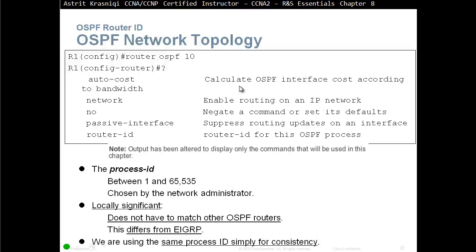The auto-cost command calculates the OSPF interface cost according to the bandwidth. By default, OSPF will derive the cost using the bandwidth with a default formula. This is not very good anymore because we have faster interfaces than Fast Ethernet, such as Gigabit Ethernet. So if you have Gigabit Ethernet and faster, then you definitely need this command — otherwise the OSPF protocol will treat Fast Ethernet, Gigabit Ethernet, and 10 Gigabit Ethernet all the same.